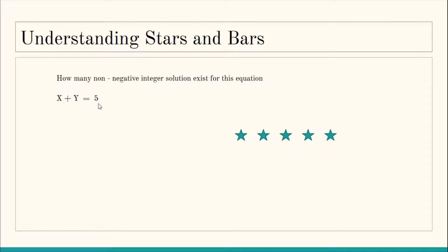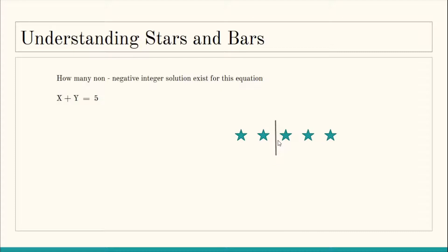We have n stars, and we have to divide those stars among the variables. Since stars represent n, we need something else to partition or divide the stars among the two variables — and that thing is bars. We use bars to set partitions for different variables. We need only one bar because a single bar can partition the whole thing into two parts. The left region belongs to X and the right region belongs to Y.